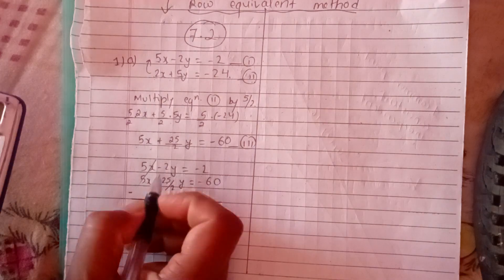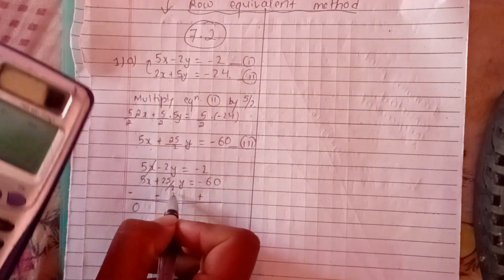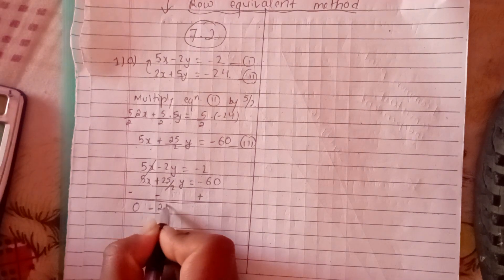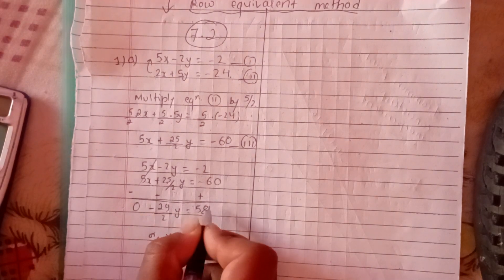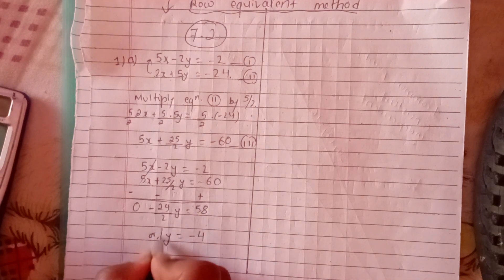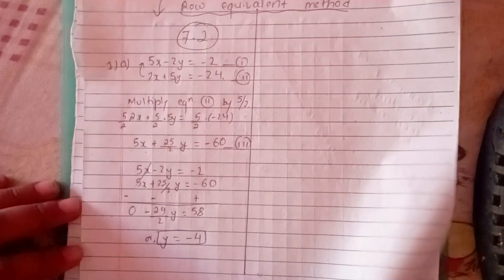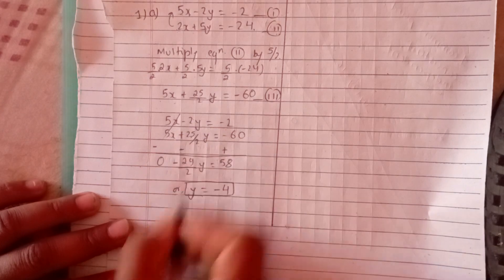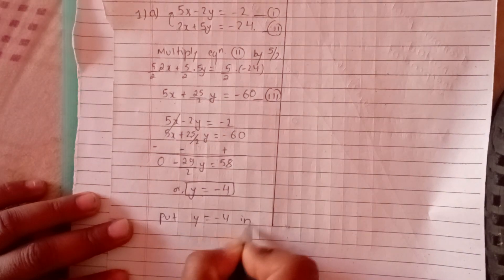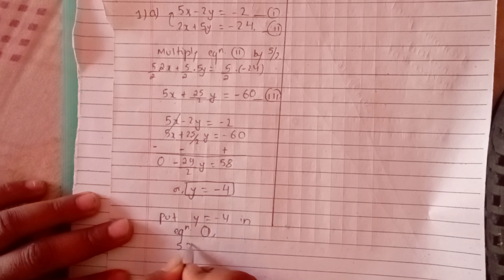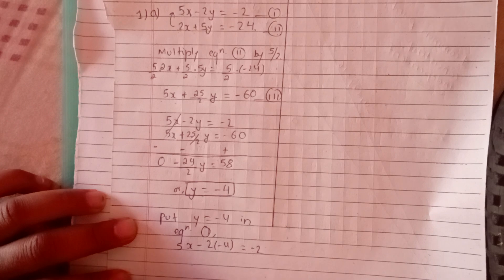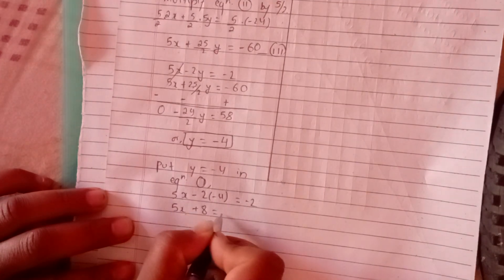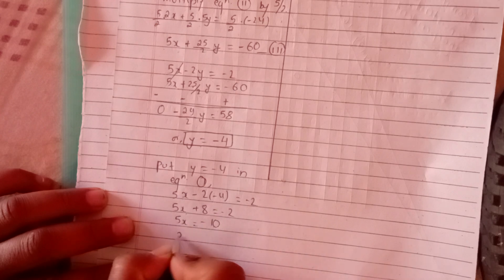Let's solve: we subtract to eliminate x. We get minus 25 over 2 y, and we have minus 29 over 2 y equals 60 minus 2. Solving: 29 over 2 gives us minus 4 for y. So y equals minus 4. Putting y equals minus 4 into equation 1: 5x minus 2 times minus 4 equals minus 2, giving 5x plus 8 equals minus 2, so 5x equals minus 10, and x equals minus 2.